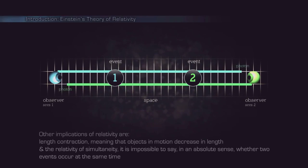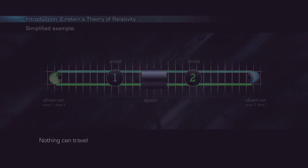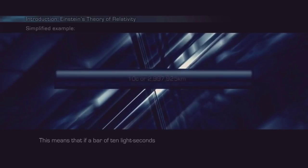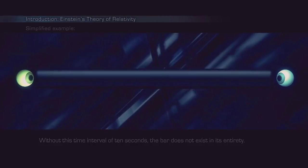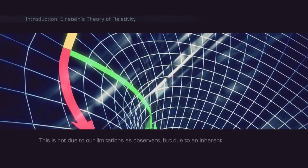Nothing can travel faster than the speed of light. This means that if a bar of 10 light seconds long would be pushed forward, it would take 10 seconds before the action can take place on the other side. Without this time interval of 10 seconds, the bar does not exist in its entirety. This is not due to our limitations as observers, but due to an inherent consequence of relativity, where time and space are interconnected and cannot exist without each other.